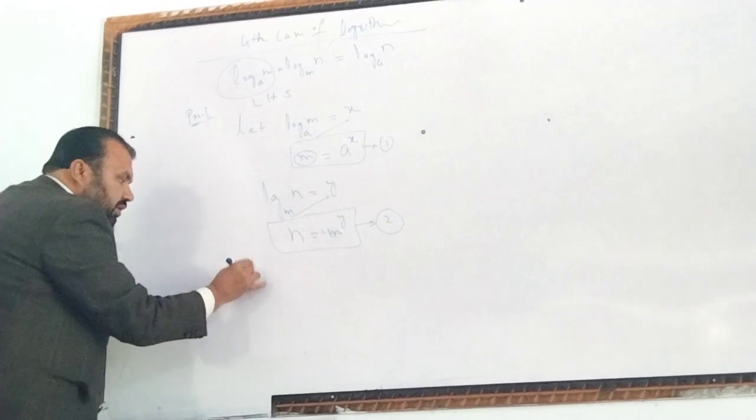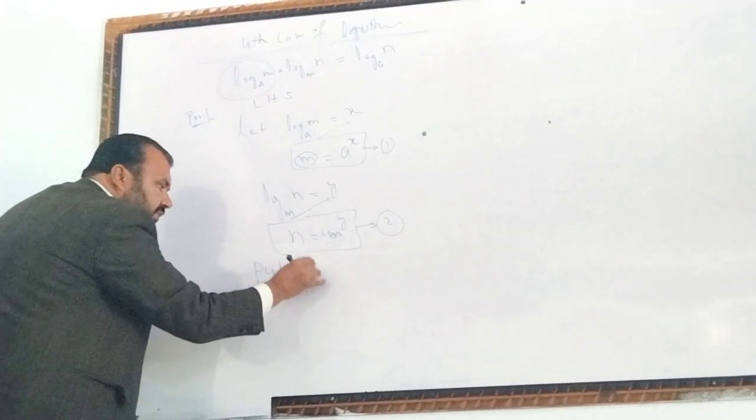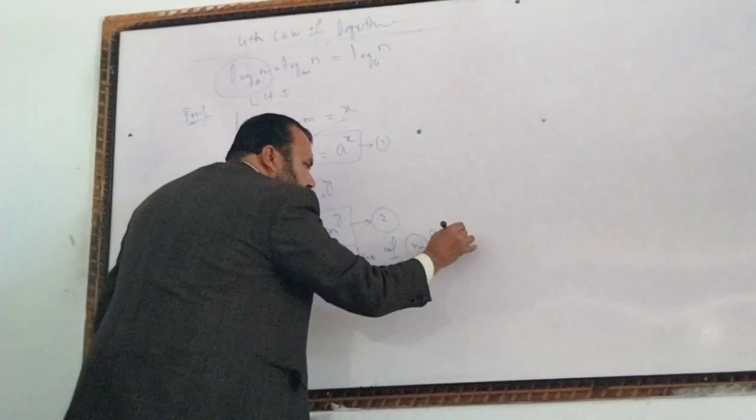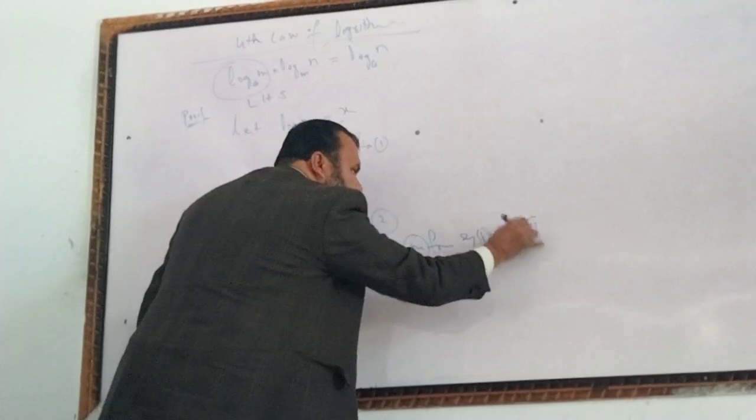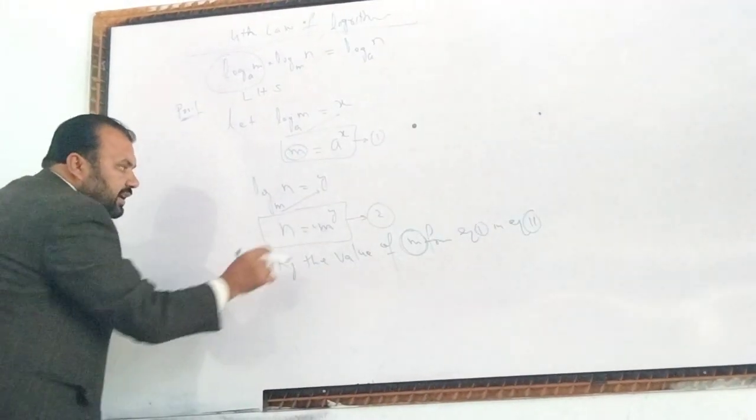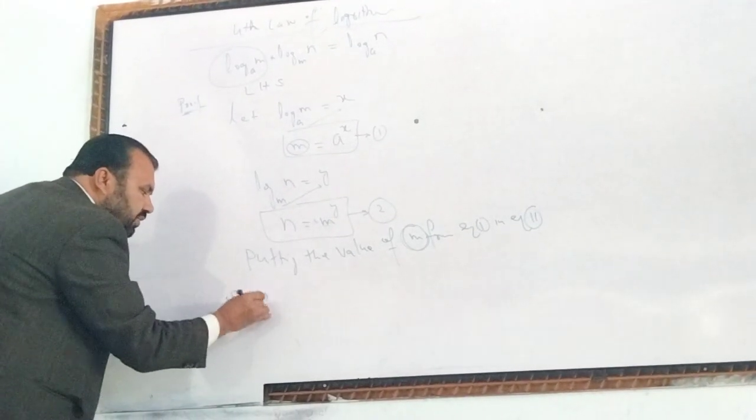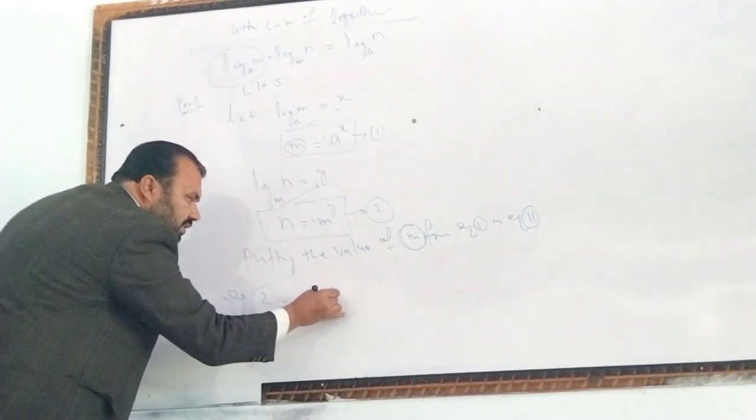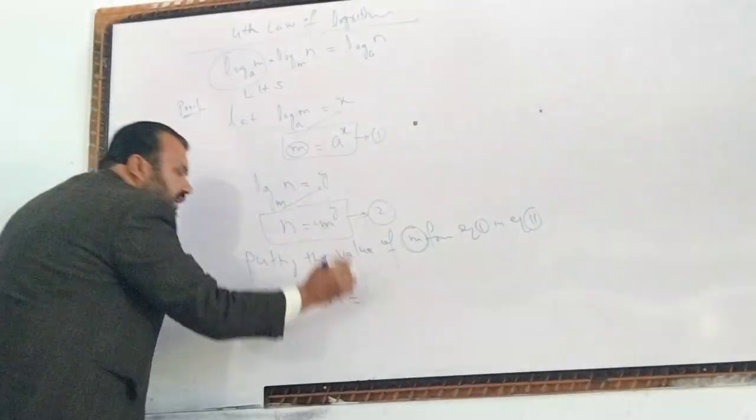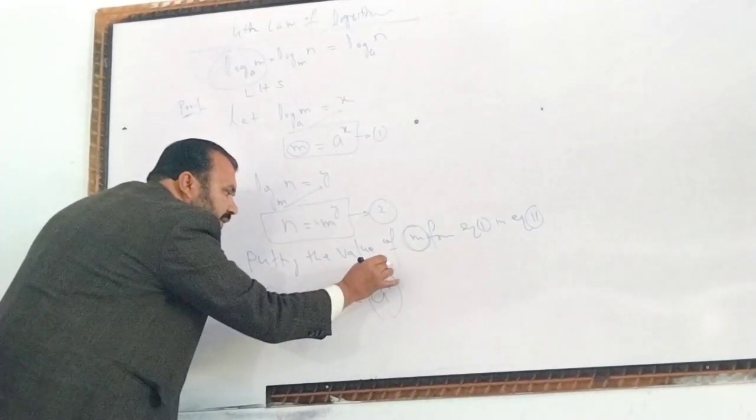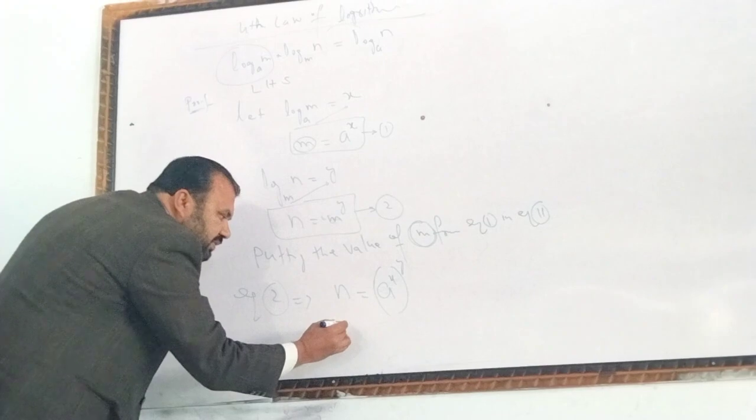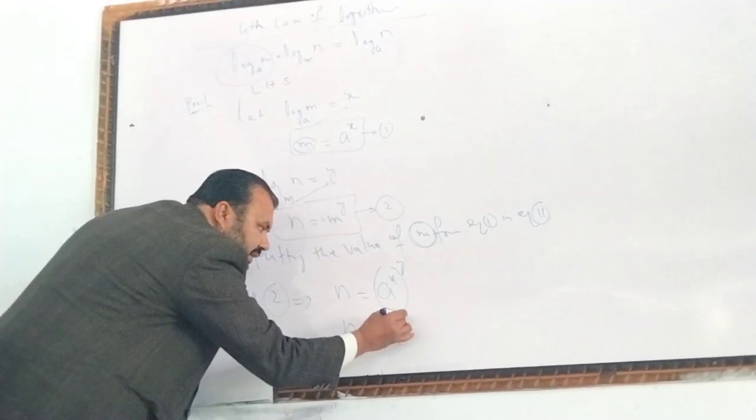Our equation is putting the value of M from equation 1 into equation 2. Equation 1: N is equal to A to the power of X. Equation 2: N is equal to A to the power of X. If we understand that, when we say N is equal to A to the power of X.